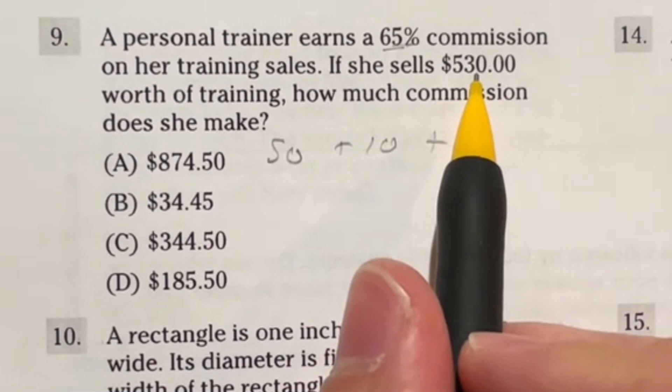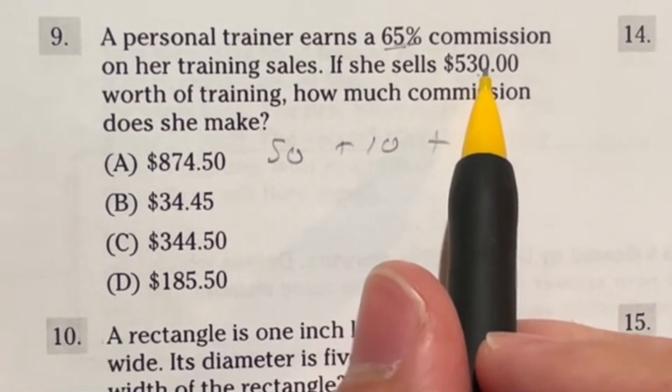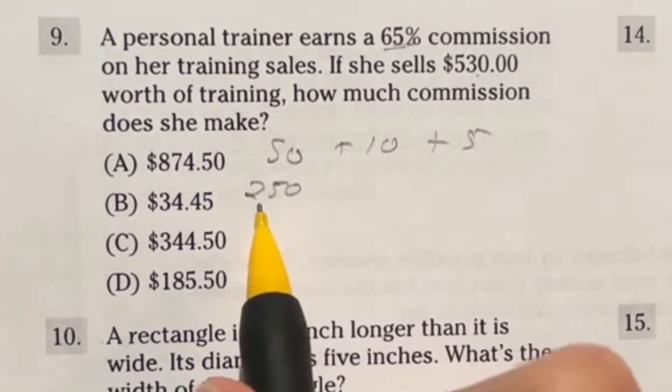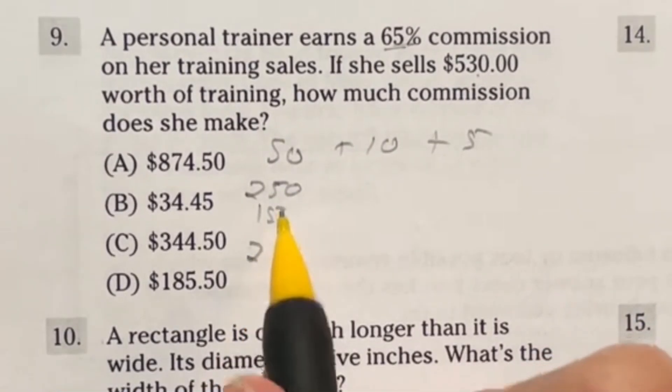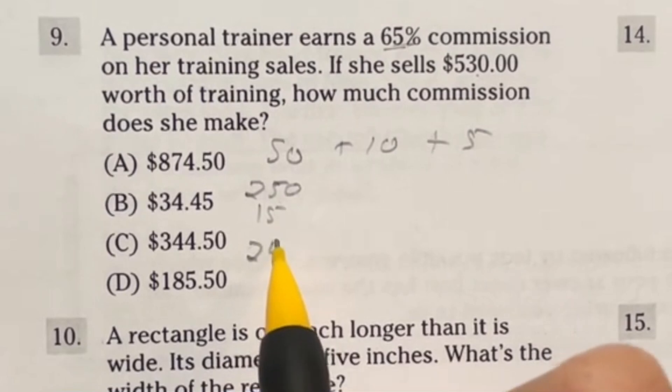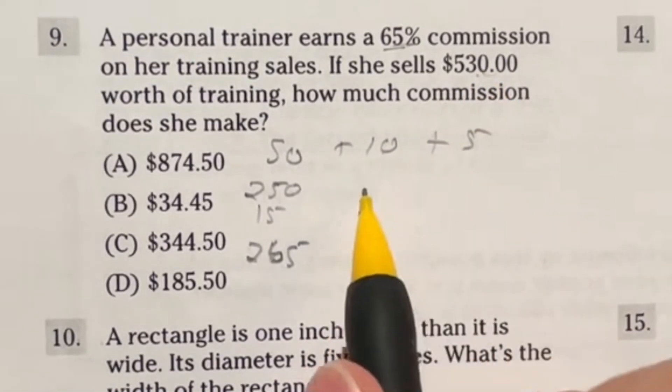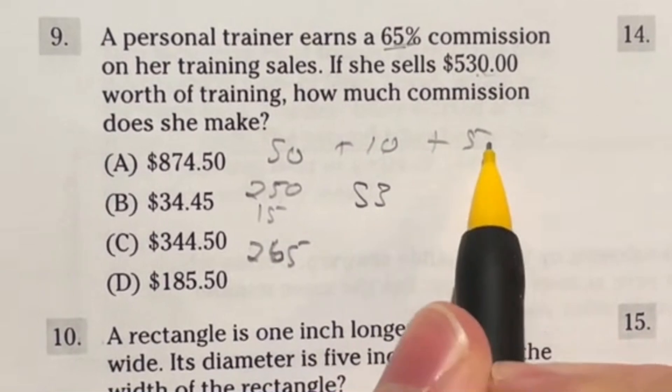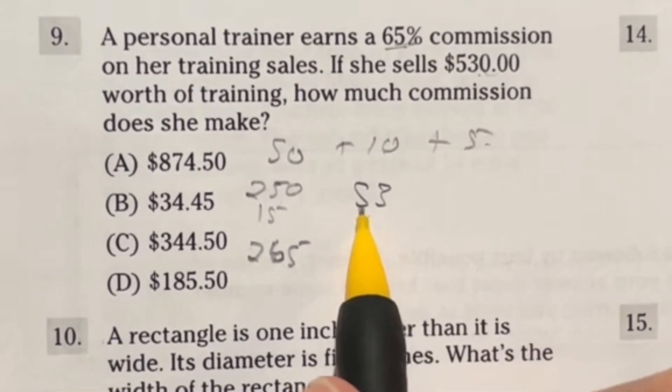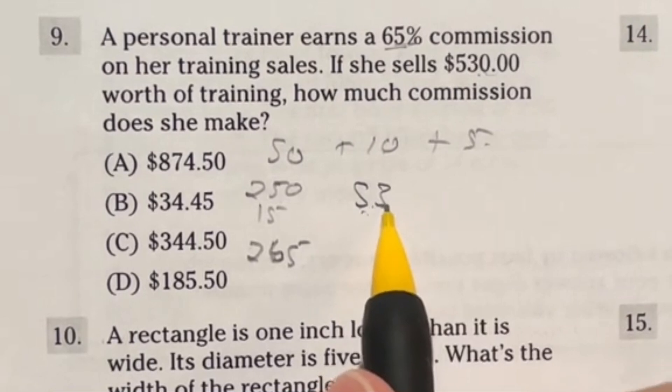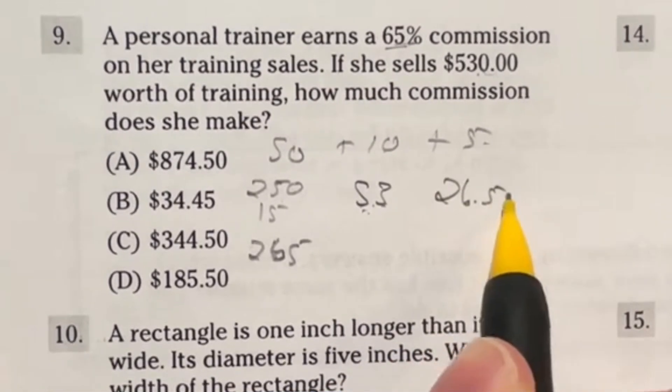I'm going to break this down into 50% plus 10% plus 5%. So 50% means half of this guy. What is half of 530? Well, half of 500 is 250 and half of 30 is 15. So 250 plus 15 gives me 265. Then we have 10%, you just move the decimal place over one. So that's 53. And 5% is just half of that. Half of 50 is 25 and half of that is one and a half. So 25 plus one and a half would be 26 and 50 cents.